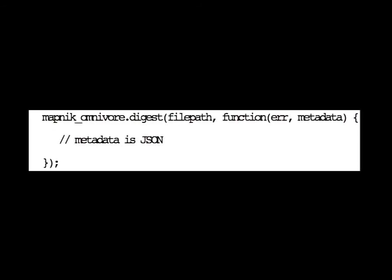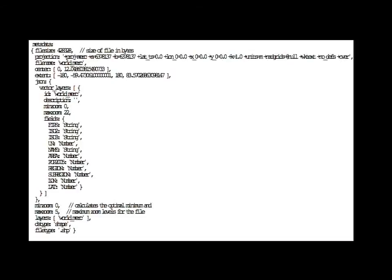A couple of examples of modules using Node GDAL and Node Mapnik: first, an open source module called Mapnik Omnivore. Essentially you throw it a file and it spits out the metadata of that file — kind of like GDAL info. It gives you that metadata in JSON, providing things like file size, projection, and layers. It even calculates what the min zoom and max zoom should be, based on file size. You can also use this for raster data, where to calculate the proper min and max zoom, we use pixel resolution rather than file size.